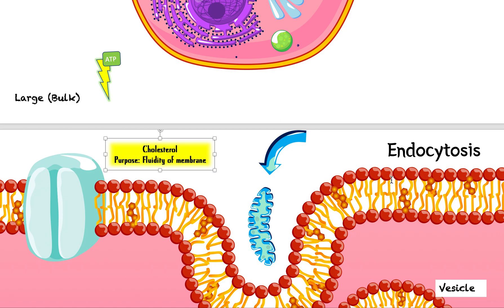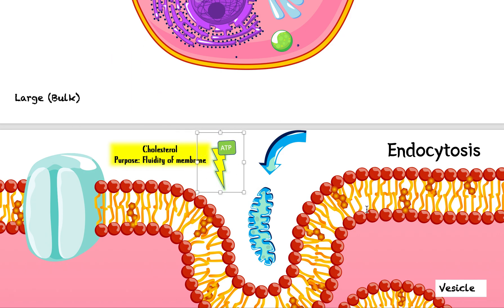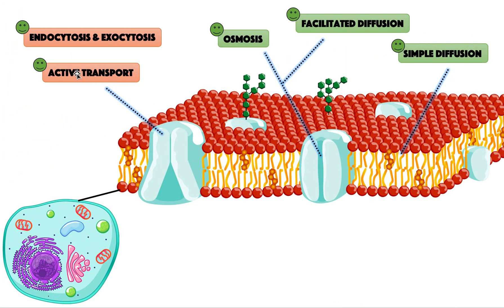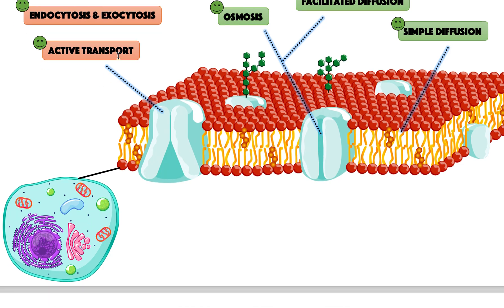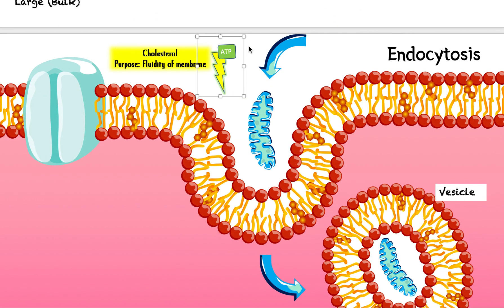This process doesn't happen naturally — we need to expend energy and use ATP for it to happen. I won't show exactly where and how ATP is used because that's university-level detail. For now, just know we need this energy to make the membrane bend the way it does. That's why endocytosis and exocytosis are similar to active transport — both require ATP. That's why I've marked them in red, while the passive transport methods are green.